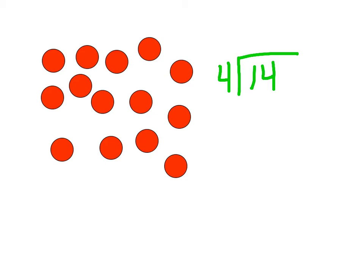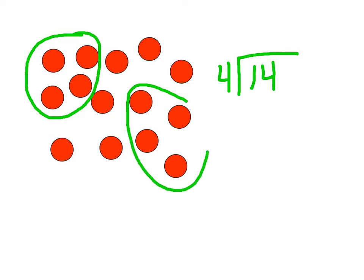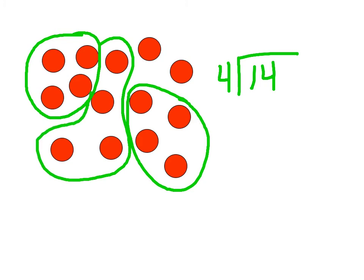Let's go ahead and basket these up. We've got one basket there, and here's another basket, four, four — and we'll go ahead and put these four in a basket. So we have three baskets with two apples left over. That would be our remainder of two.